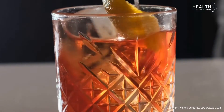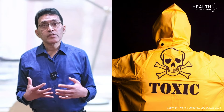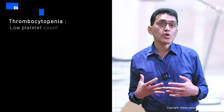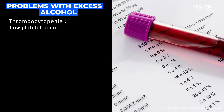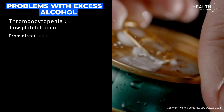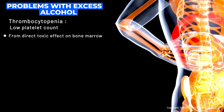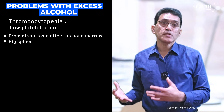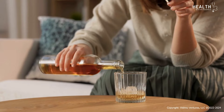Alcohol has a direct toxic effect on the bone marrow causing thrombocytopenia, meaning low platelet count. In addition, alcohol can damage the liver and lead to an enlarged spleen, called splenomegaly.